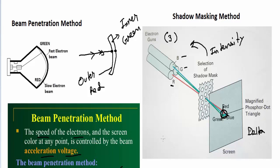This is mostly used in CRT displays or CRT systems because a much more focused and brighter image is formed. So this was all about beam penetration method and shadow masking method. Thanks for watching.